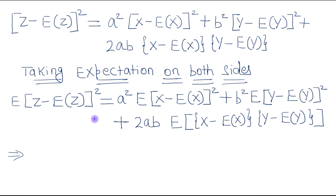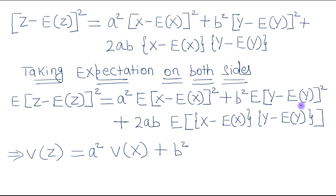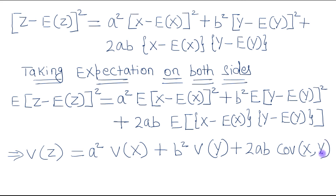This will become variance of z, equals a squared times — this is the formula of variance of x — plus b squared times variance of y, plus 2ab times — and this is the formula of covariance between x and y. The last step is we will replace z by ax plus by.